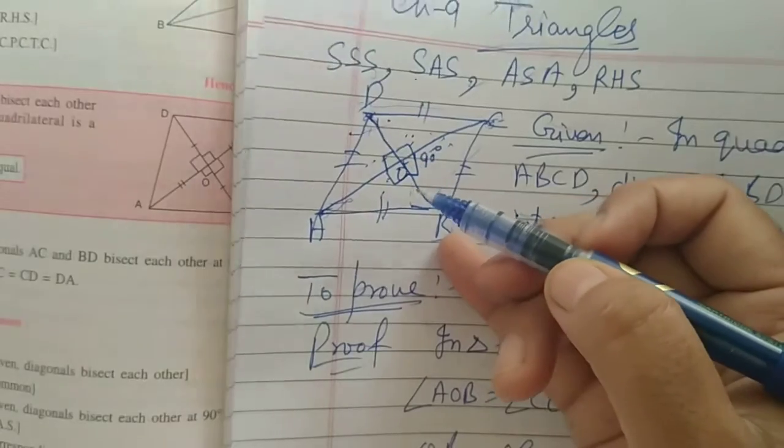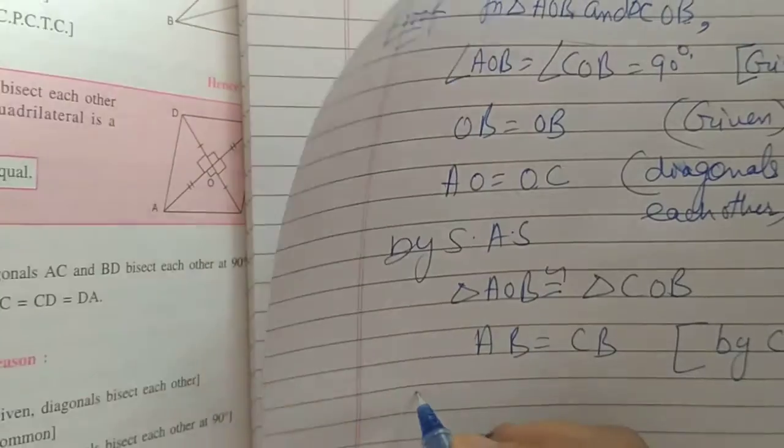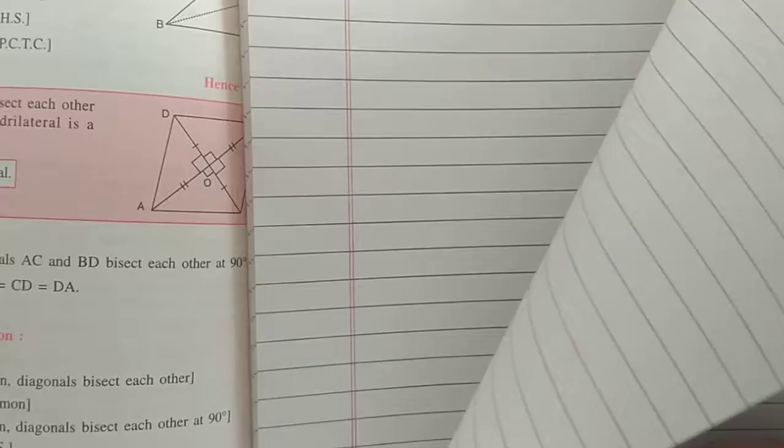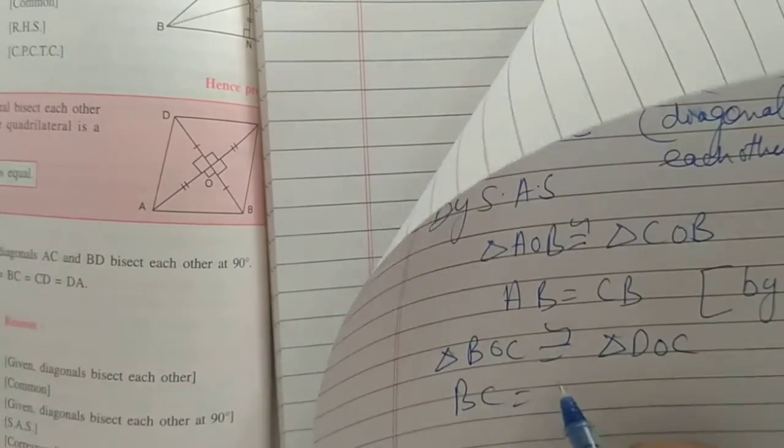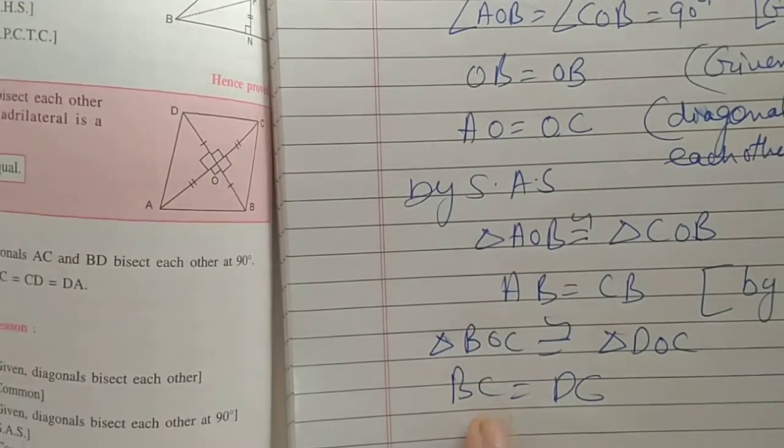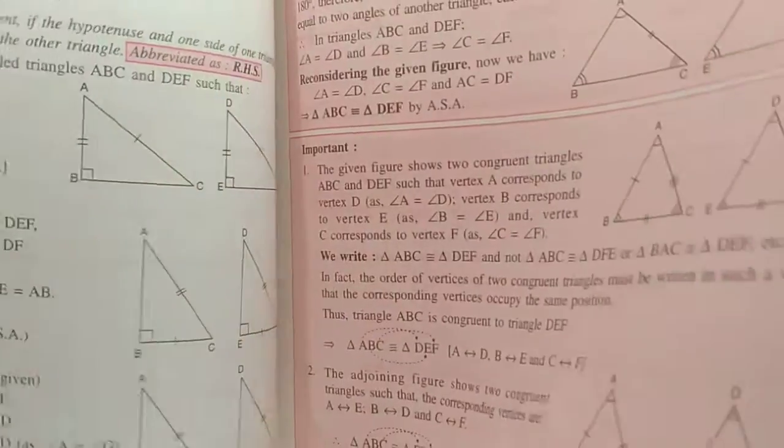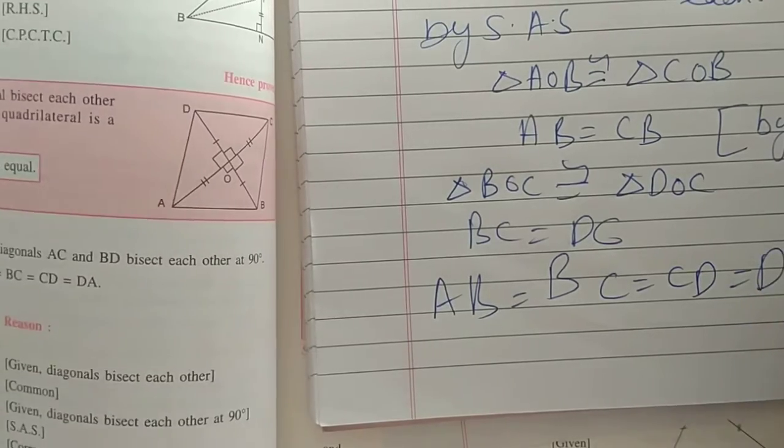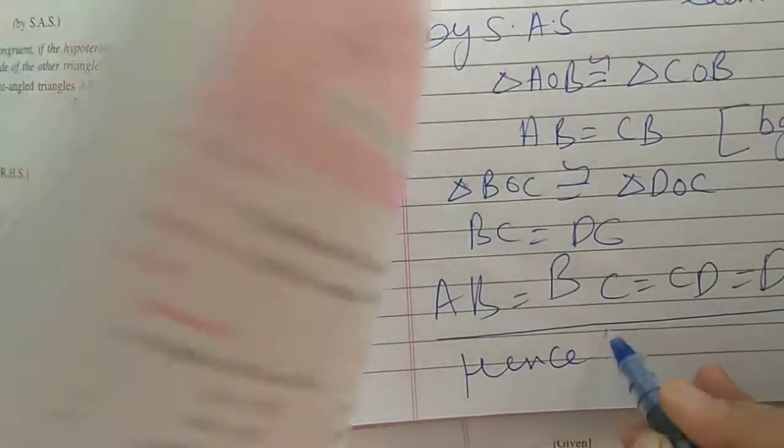Okay, then combine them. So, similarly, by taking triangle BOC is congruent to triangle DOC, then we will get BC is equal to DC. Then combine both of them, so all sides will be equal. AB is equal to BC is equal to CD is equal to DA. So, this we have to prove. In the last, you will write, hence proved.